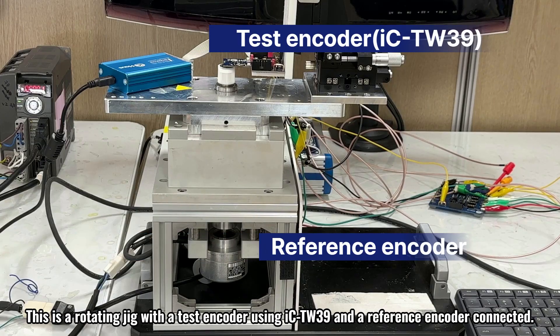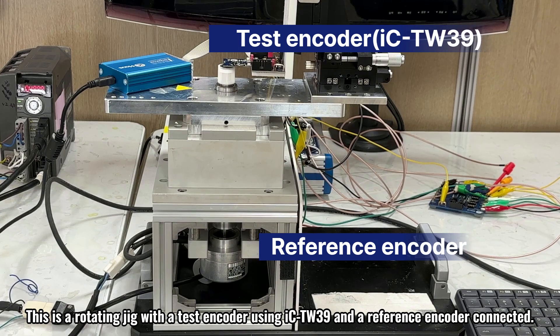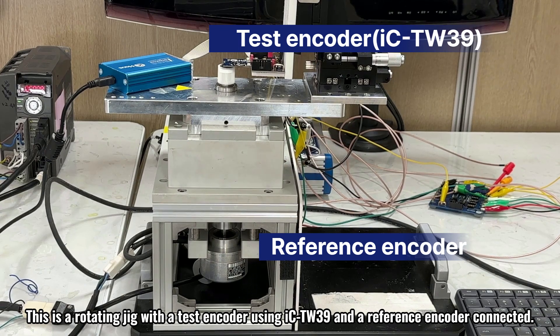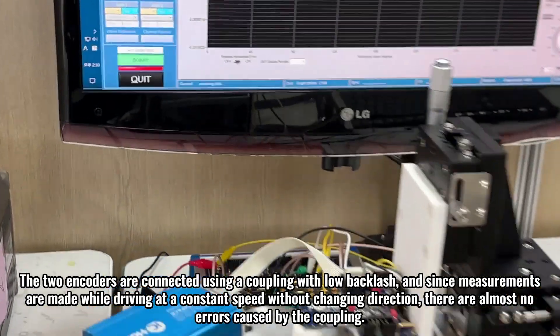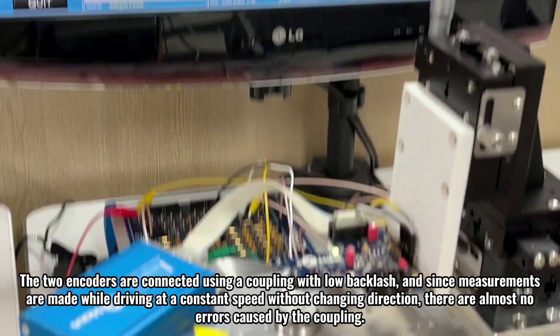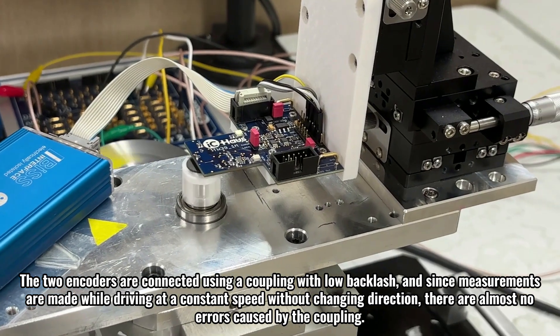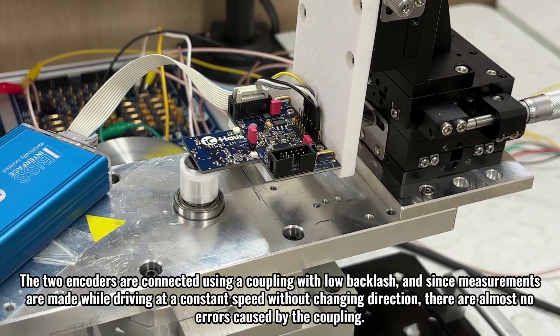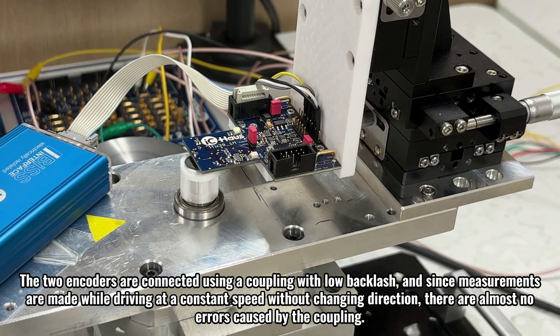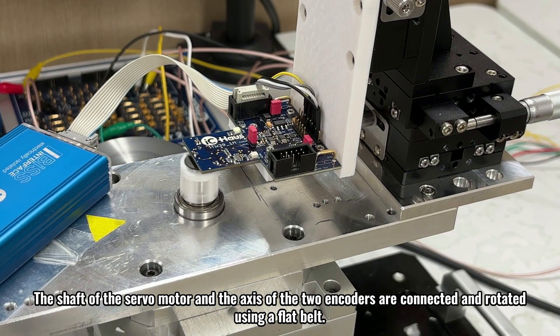This is a rotating jig with a test encoder using IC-TW39 and a reference encoder connected. The two encoders are connected using a coupling with low backlash, and since measurements are made while driving at a constant speed without changing direction, there are almost no errors caused by the coupling. The shaft of the servo motor and the axis of the two encoders are connected and rotated using a flat belt.